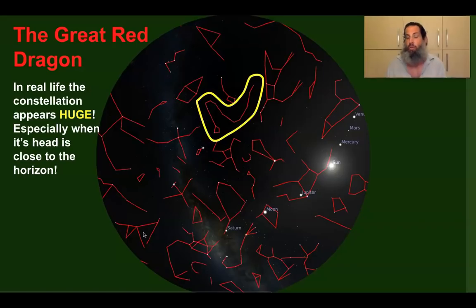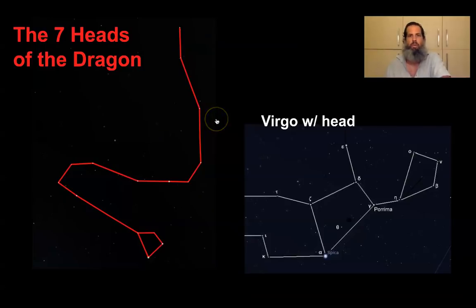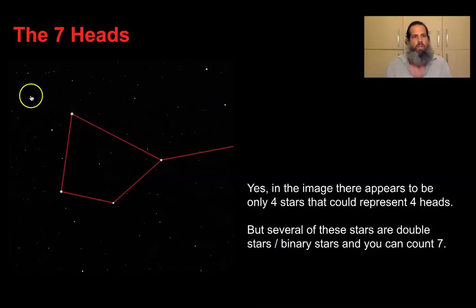Now, you might be saying, Nick, there's only one head, but the scripture says seven heads. I agree. This is where I'm going to try to stretch this one a little bit, but we do know that this constellation from over 2,000 years ago was always the dragon, the serpent. When John wrote about this in Revelation, everybody knew this constellation. The seven heads might seem like a stretch, and I would suggest possibly stars. You're going to say, well, there's only four stars here.